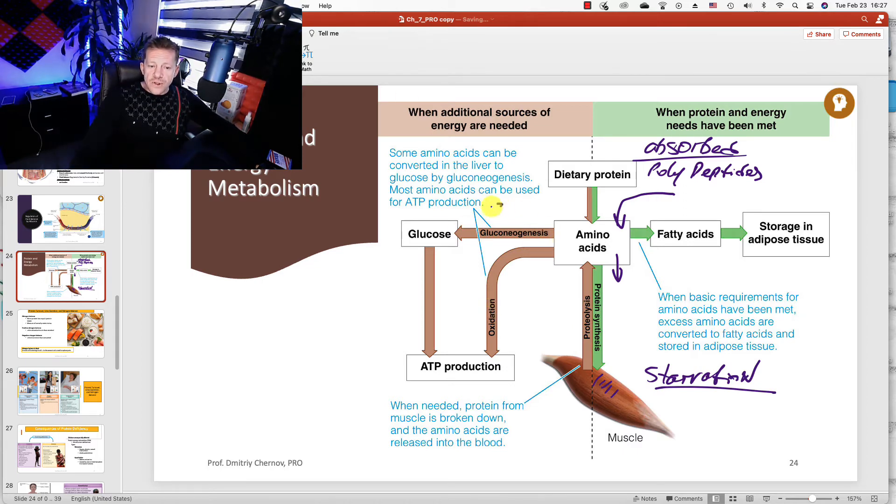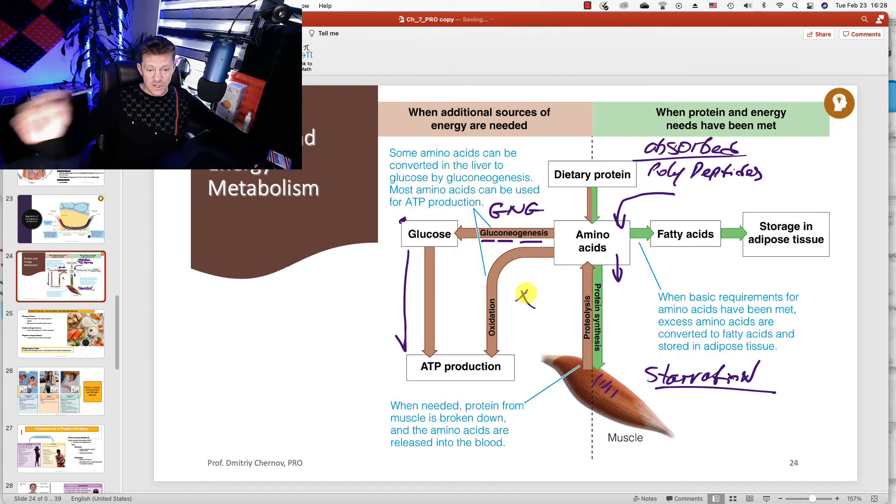And through the process of gluconeogenesis - gluco, glucose, neo, genesis, generation - your body will convert glucogenic amino acids into glucose, and this glucose would be used as energy. Amino acids could be used as energy directly as well without being converted. I'm going to skip a few steps; it's too early in the course. We will talk about this particular process later on.